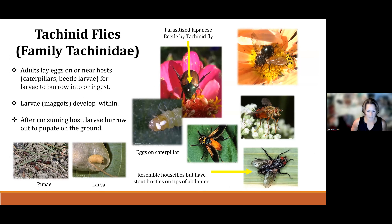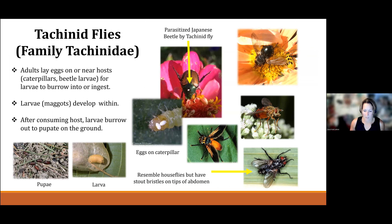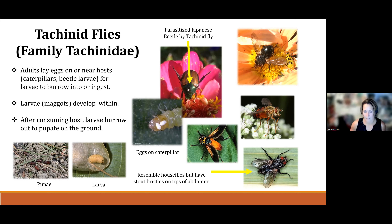Tachinids — a few facts about them. They're mostly nondescript black or grayish flies and could be mistaken for house flies, but in general they're much hairier. They're parasitic on a wide variety of insects like spongy moth caterpillars and Japanese beetle adults. For example, the winsome fly is a tachinid that was native to Japan and was actually released in the wild in the early 1900s to combat the Japanese beetle. The small white eggs you see on Japanese beetles are most likely that tachinid. After the larvae hatch, they penetrate into the host, develop within it, and then burrow out of the carcass to pupate on the ground.